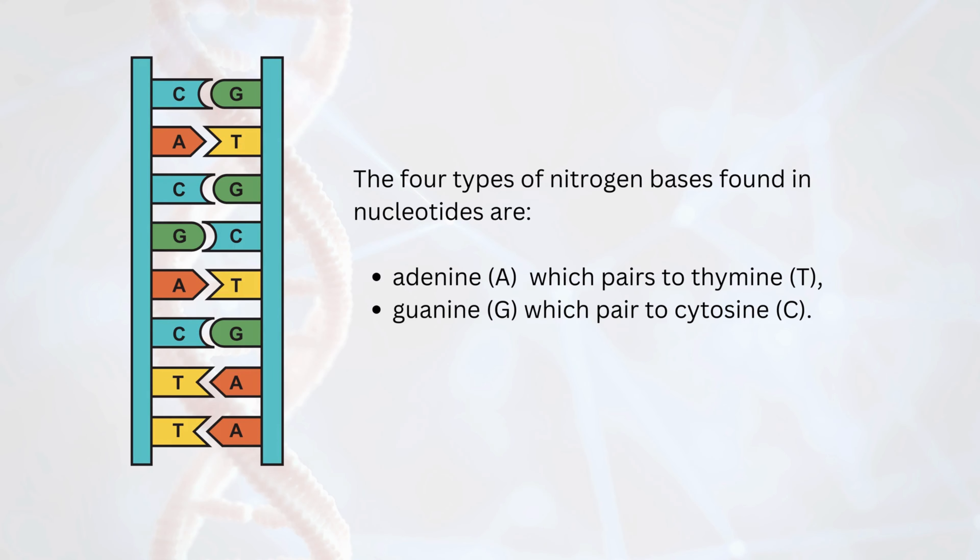Pairing of nitrogen bases found in nucleotides: adenine (A) pairs with thymine (T), and guanine (G) pairs with cytosine (C).